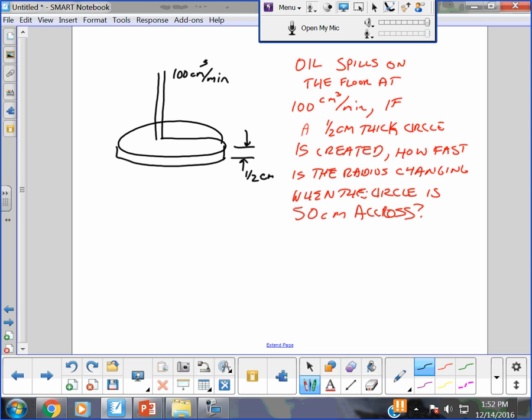All right. So that's what's going on. And it's saying when the puddle is 50 centimeters across, how fast is the radius, which I'll call R, how fast is dr/dt? What is dr/dt? And I would do this when the radius is 25 centimeters. That's what's going on here.